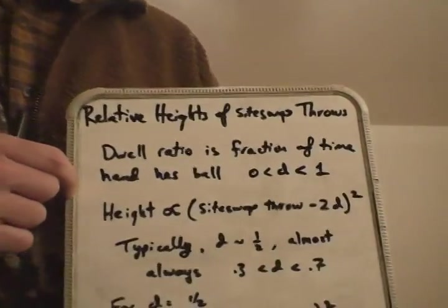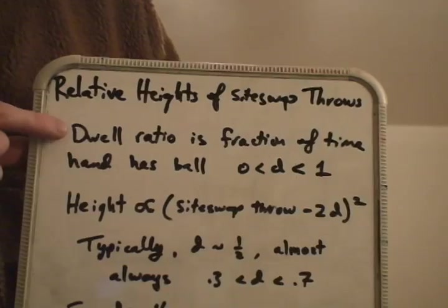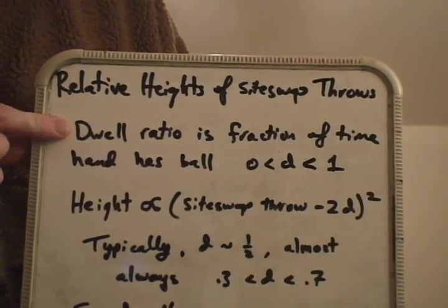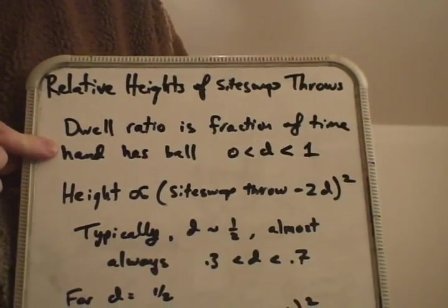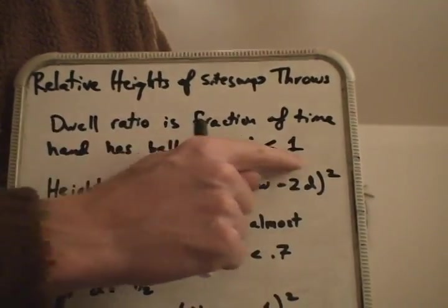So, what are the relative heights? Here's how to calculate it. First I have to define a term which is the dwell ratio, and that's the fraction of time that a hand has a ball in it. The number has to be between 0 and 1.